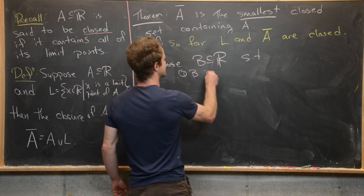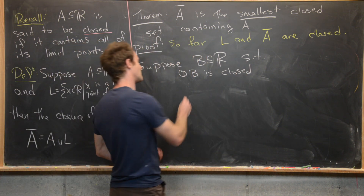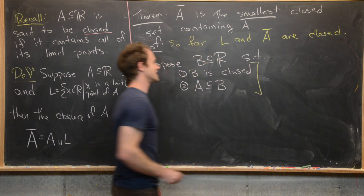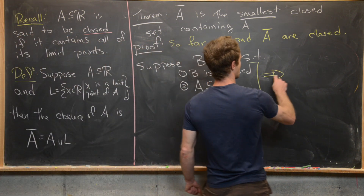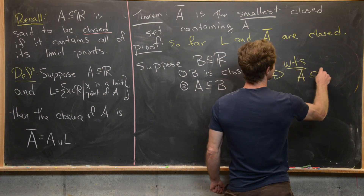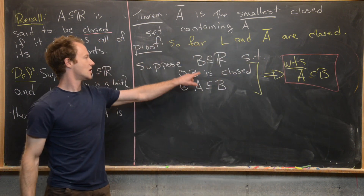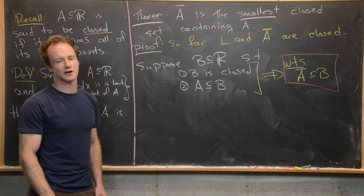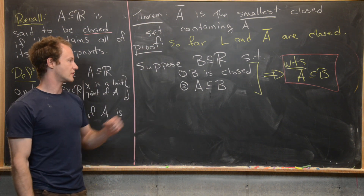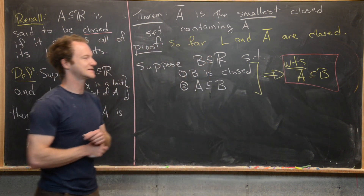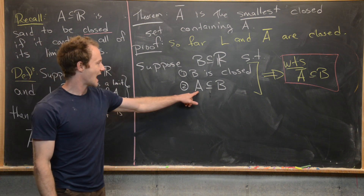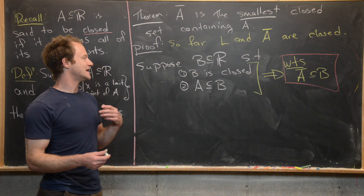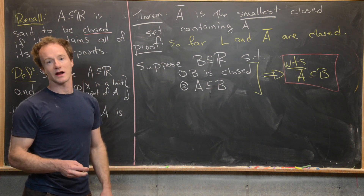We want to show that A-bar is contained in B. For A-bar to be inside B, since A is already a subset of B and A-bar is built from A and its limit points, we need to show that all limit points of A are inside B. So let's show this: if x is in the closure of A, then x is in A or x is in L. If x is in A, then immediately x is in B since A ⊆ B. So we only need to focus on the case when x is in L.